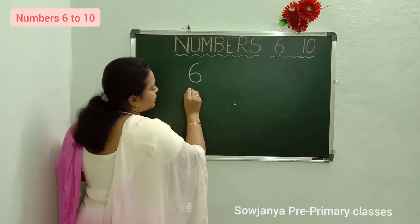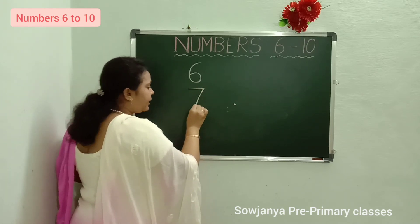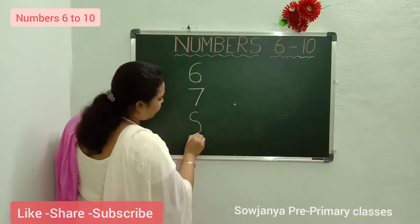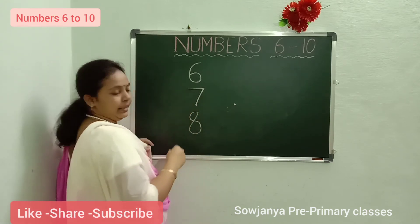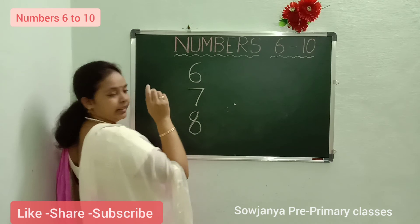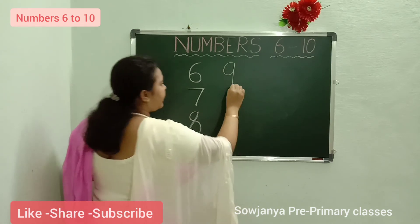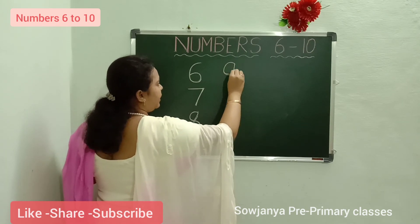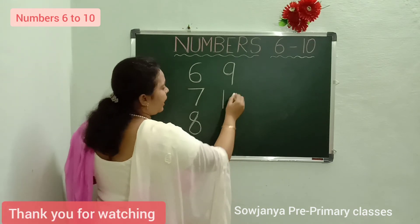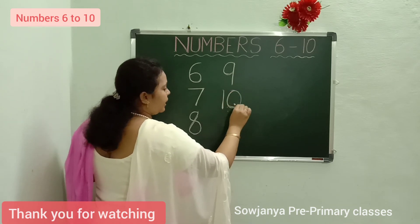Now how to write 7? Sleeping line, slanting line. 7. Sleeping line, slanting line. 7. How to write 8? Right curve, left curve, slanting line. 8. Nine: circle, standing line. Nine. Circle, standing line. Nine. Ten: standing line, circle. Ten. Standing line, circle. Ten.